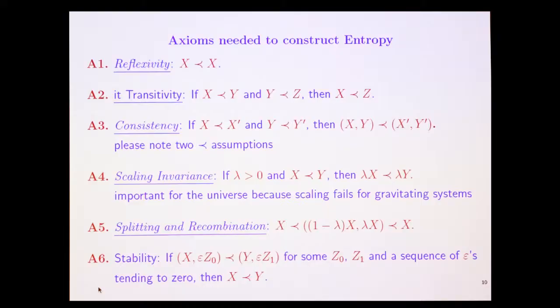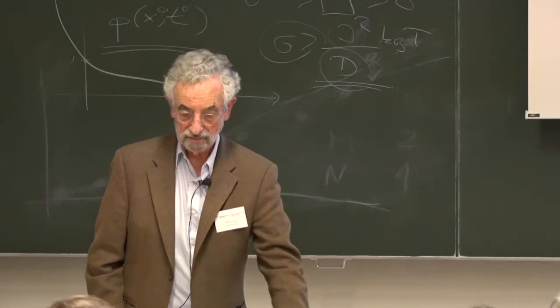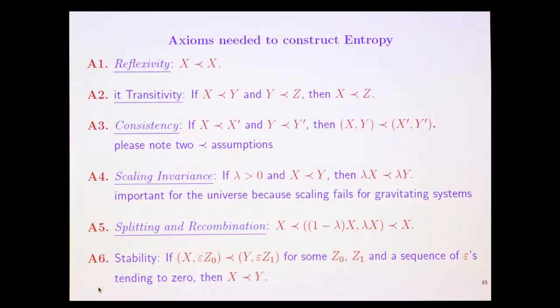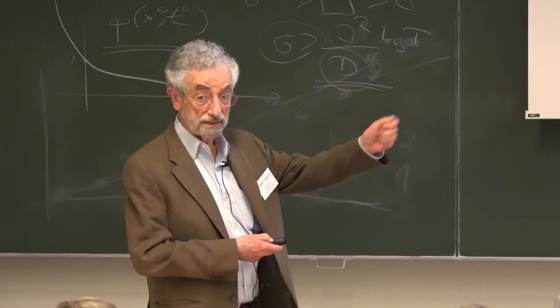A5: Splitting and recombination. I can go from x to two containers. I can split it into two containers. One with one minus lambda moles and the other with lambda moles. Take this bottle of water and put it into two glasses. A6: Stability. And I need some kind of continuity. There are no pictures of x and y, u and v, nothing like that here at this stage.